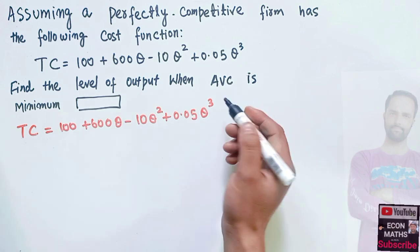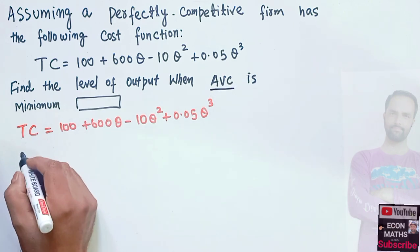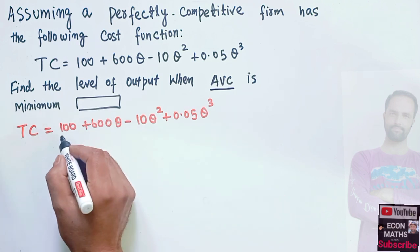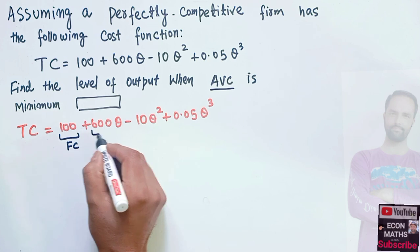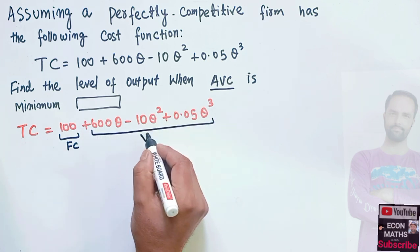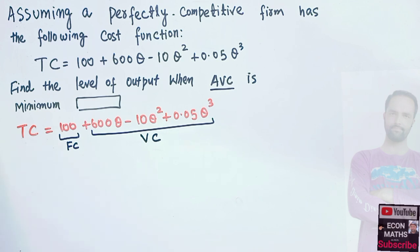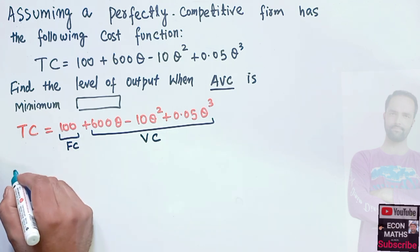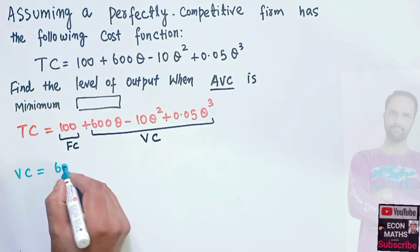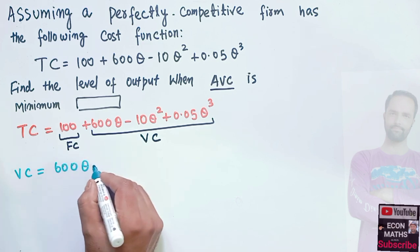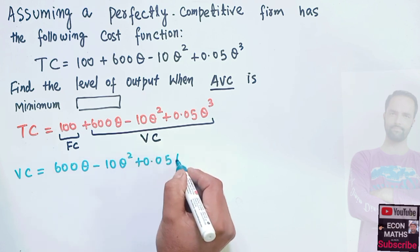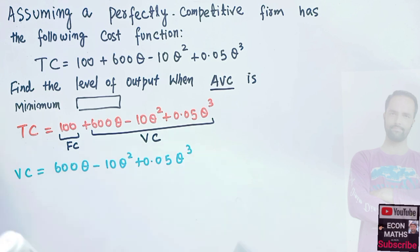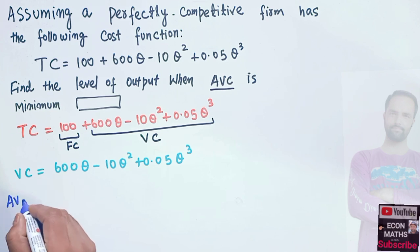First, we need to find the average variable cost. For that, we need to find the variable cost. The 100 here is fixed cost — it does not depend upon the level of output. All the other three terms denote variable cost. So we can write variable cost equals 600q minus 10q squared plus 0.05q cubed.